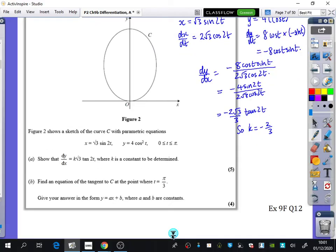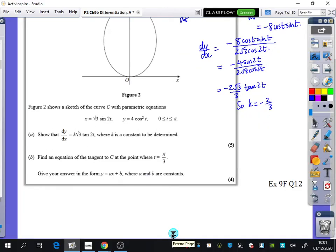Then it wants us to do the equation of the tangent to C where t is pi over 3. So if t is equal to pi over 3, I need three things. I need to find out the gradient. So that's going to be minus 2 root 3 over 3 multiplied by the tan of 2 pi over 3. Now, tan of 2 pi over 3 is going to be the minus tan of pi over 3. But I'd probably put this in the calculator. What does the gradient simplify to? 3. Exactly 3. Great.